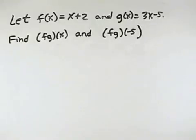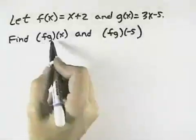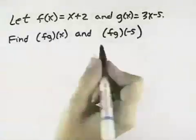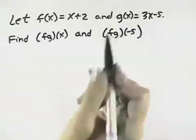Let f of x equal x plus 2 and g of x equal 3x minus 5. Find the product f times g of x, and then we'll find f times g evaluated at negative 5.